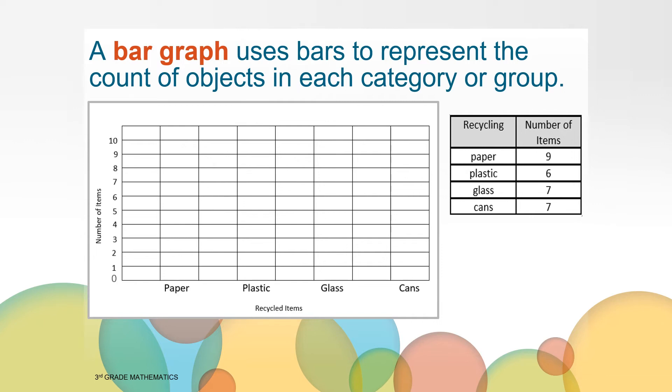Now we can color in nine boxes or fill in a bar that goes up to the number nine for paper. Next, let's color in the bar to represent the number of plastic recycling items. Using the data from the table, where do you think we should draw the bar on our graph? That's right. We'll draw a bar that goes up to the number six.